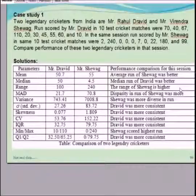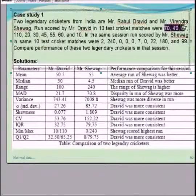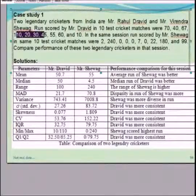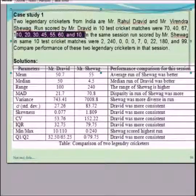Runs scored by Mr. Dravid in 10 test cricket matches were: 70, 60, 40, 60, 60, 100, 10, 20, 30, 45, 45, 60, and 10.